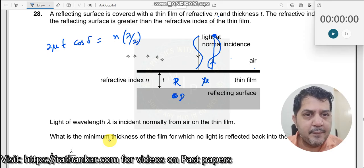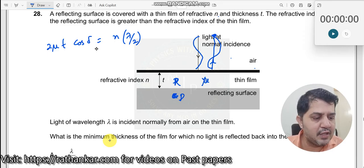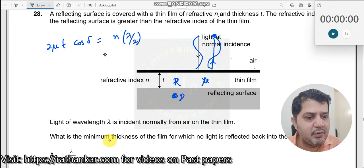For this to happen, the phase difference here should be equal to—let me put n equal to 1, and the phase difference should be equal to 180 degrees. So delta is 180.